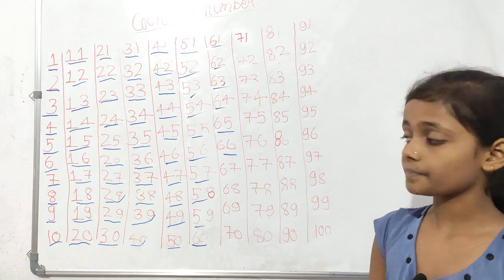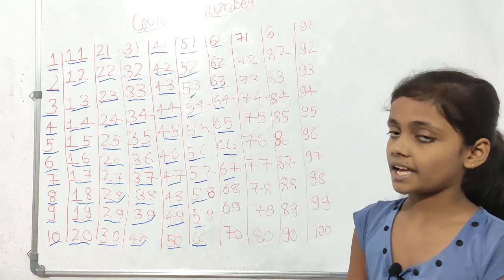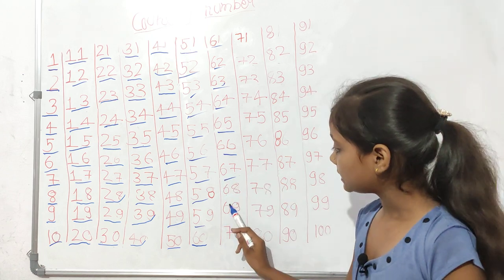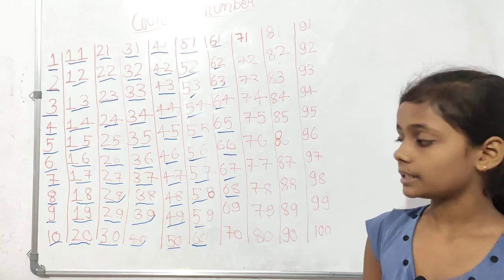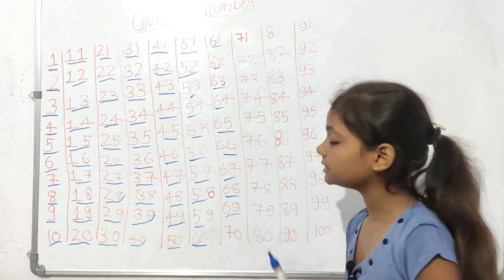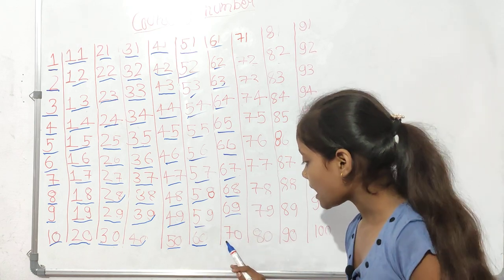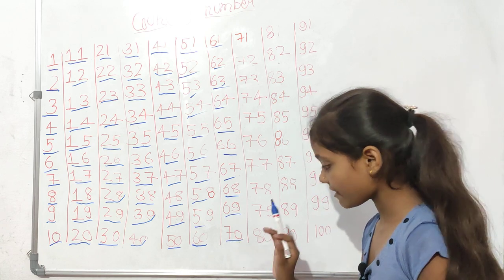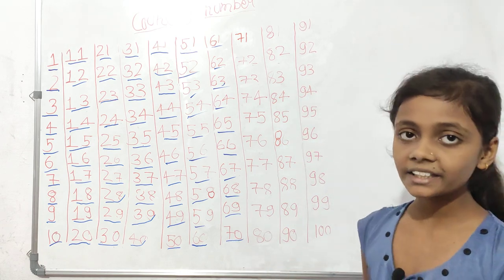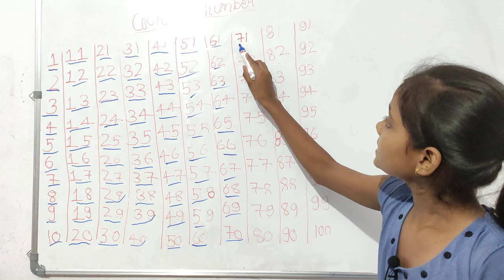Sixty-six, sixty-seven, sixty-eight, sixty-nine, seven zero, seventy. Okay, seventy-one.